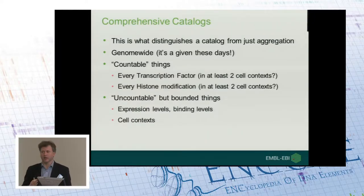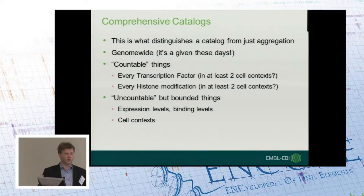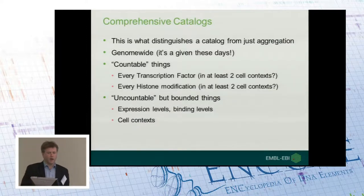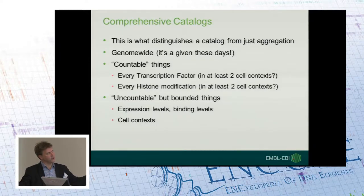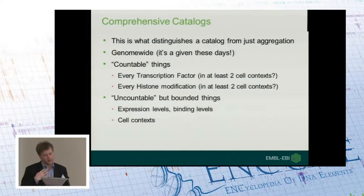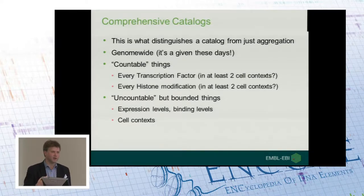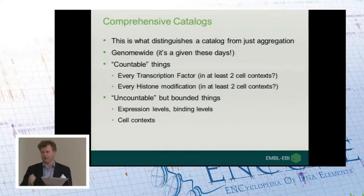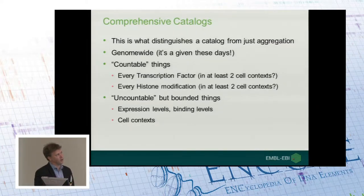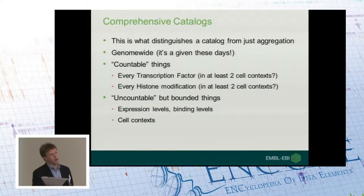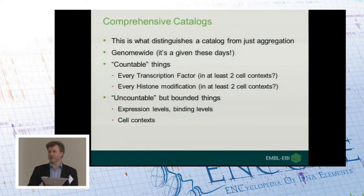I want to distinguish a catalog from aggregation because they look similar — both involve putting a lot of data together that can be downloaded and reused. But there is a difference: a catalog is comprehensive. You've defined a goal to generate your catalog, and then you want to reach that. Biology is annoying — you can't finish the human genome through the centromeres, and you can't get every cell context as a definable thing — so you have to handle that in some way. One aspect of comprehensive that was a big thing back in 2002 but is just not a big thing these days is that everything is genome-wide. We no longer debate that seriously — and that's a good thing.